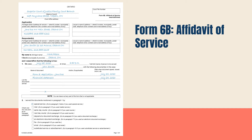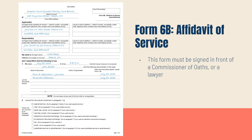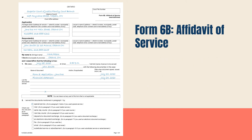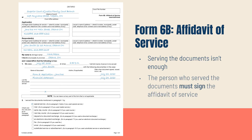The Affidavit of Service needs to be signed in front of a Commissioner of Oaths. In Ontario, you can also do this in front of a lawyer. For family law matters, you can usually find a Commissioner of Oaths at the courthouse. This is important — it isn't enough that you have the documents served. The person who served the documents must sign an Affidavit of Service to prove that it was done. We'll talk about this Affidavit more in the third video of this series.